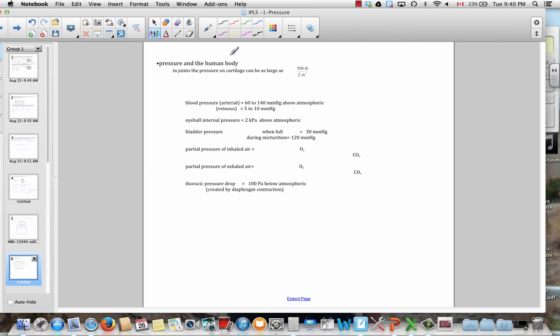So, what are some examples of some pressures in the human body? Well, in your joints, you can have hundreds, even thousands of pounds of force over a very small square number of inches. So, this is about 250 psi. And so, that's about 15 atmospheres. Your blood pressure, of course. Typically, units there are millimeters of mercury or torr. Your arterial pressure varies from 60 to 140. Your venous pressure, quite a bit lower. Your eyeball is pressurized, about 2 kilopascals above atmospheric. Your bladder, pressure goes up quite a bit when the muscles contract and you get ready to urinate. And the pressure of your lungs, well, it's about 100 pascal drop when your diaphragm contracts. So, there's not a lot of pressure change there.